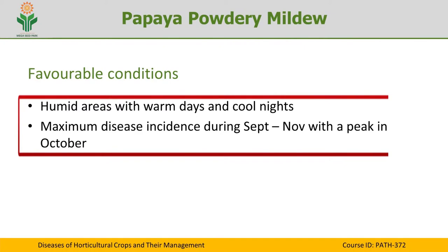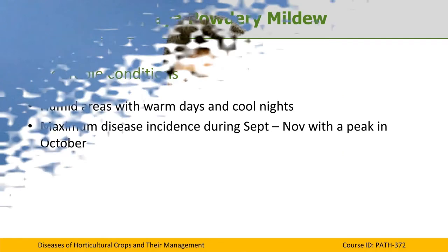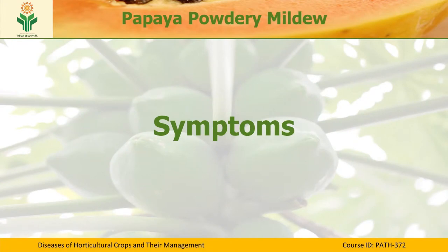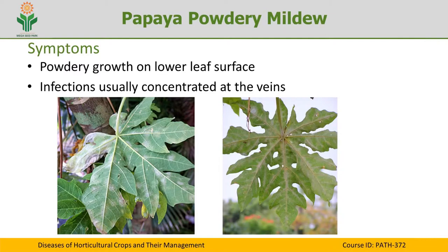Cool temperatures with high humidity are conducive for the development of powdery mildew. As cool conditions prevail from September to November with a peak in October, disease severity peaks in October and generally prevails from September to November. The pathogen is capable of infecting all stages of the crop; young leaves and unripe fruits are mostly infected compared to older ones.